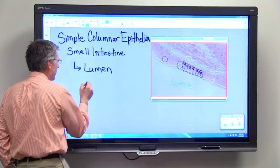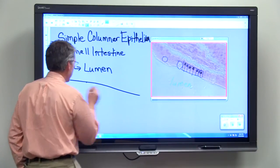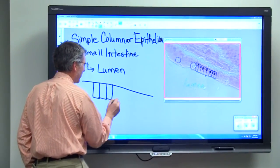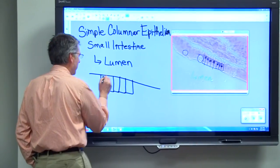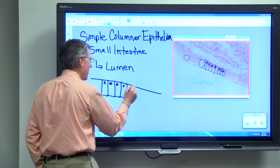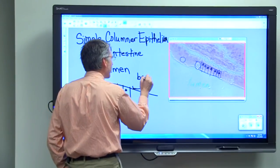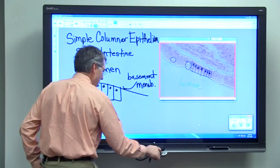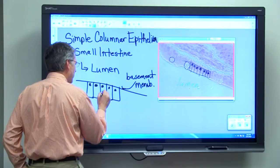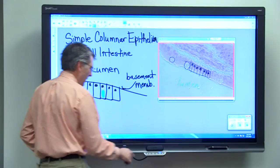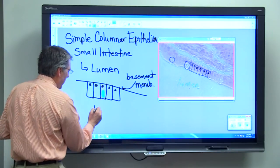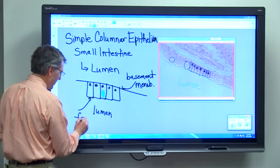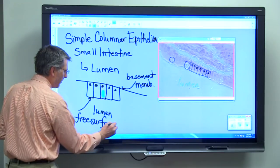If we wanted to draw that tissue, it would look something like this, which is pretty much what we have over there. We'll have nuclei all in the same level near the basement membrane, and then we'll have an occasional goblet cell. This would be the lumen, so this is the free surface of the tissue.